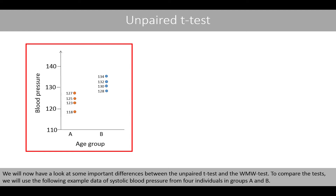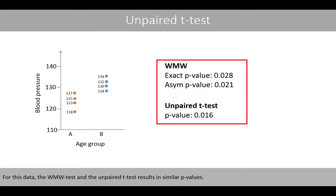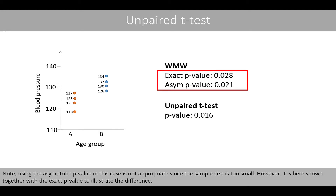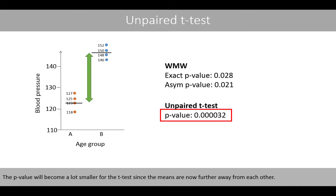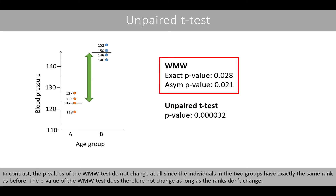We'll now look at important differences between the unpaired t-test and the Wilcoxon-Mann-Whitney test, using example data on systolic blood pressure from four individuals in each group. For this data, the two tests result in similar p-values. Note that using the asymptotic p-value here is not appropriate since the sample size is too small, but it is shown alongside the exact p-value to illustrate the difference. When the mean of group B increases, the p-value of the unpaired t-test becomes much smaller since the means are further apart. In contrast, the p-values of the Wilcoxon-Mann-Whitney test do not change at all, since the individuals in the two groups have exactly the same ranks as before.